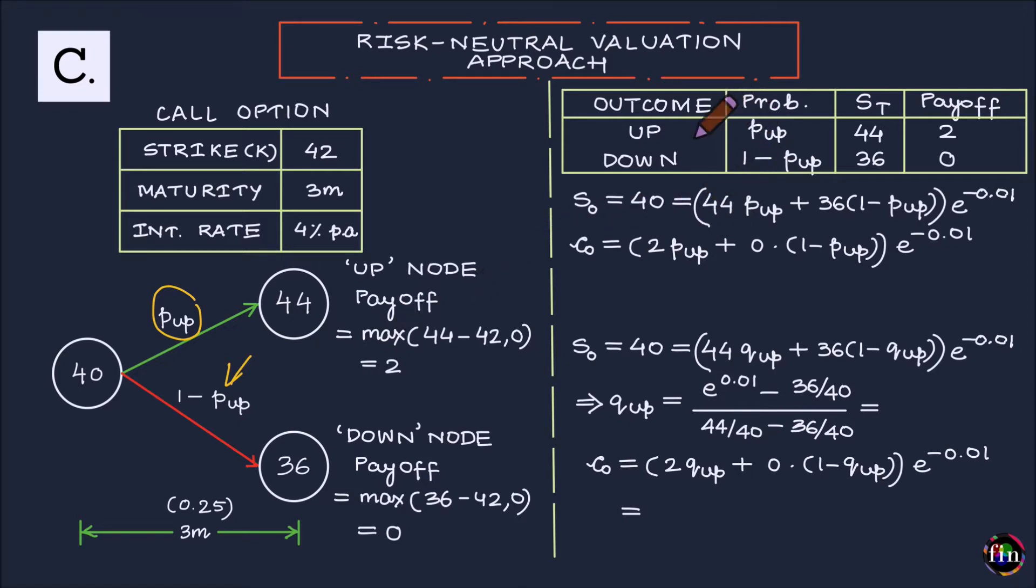So I have two outcomes. The probability of realizing these two outcomes are respectively P-up and 1-P-up. If I were to land at the up node, my stock price as of this time, which is actually capital T, which is the maturity of my option, can be either 44 or 36. The payoff of my call option, which is the function of this stock price, can be either $2 or $0.